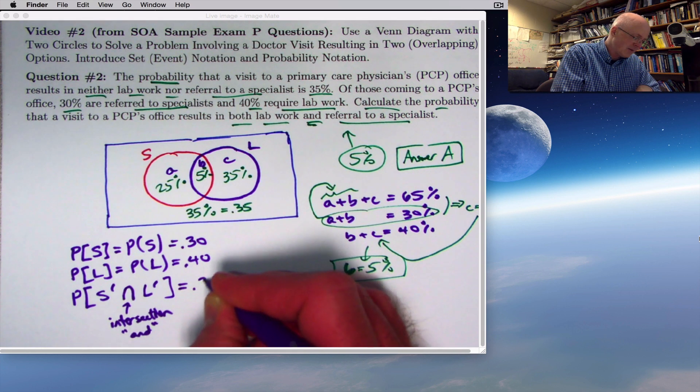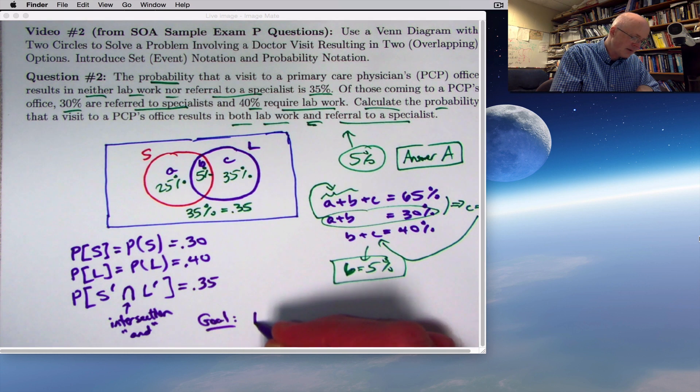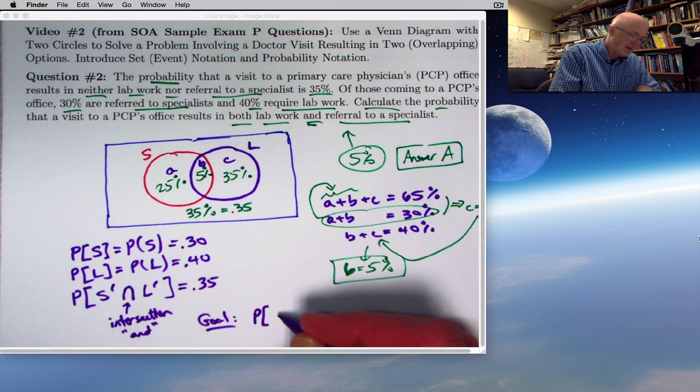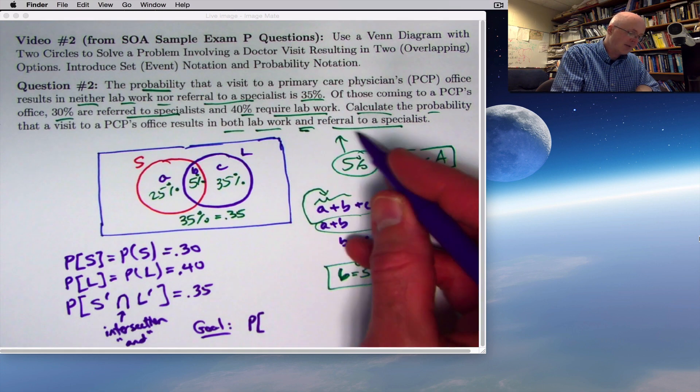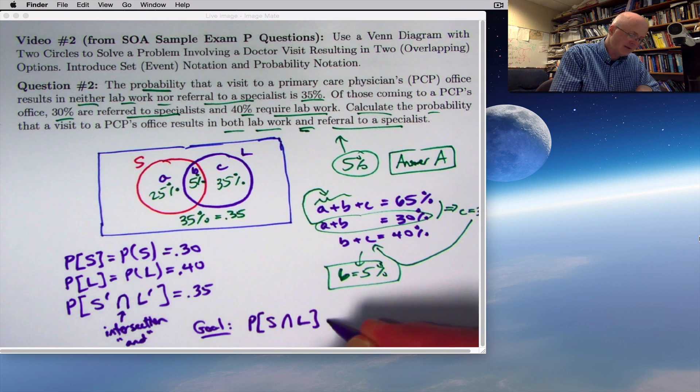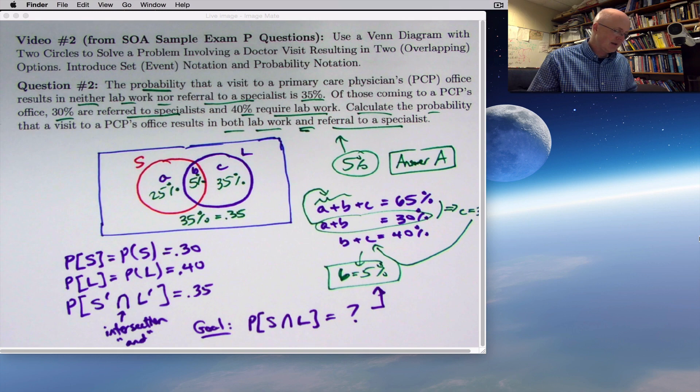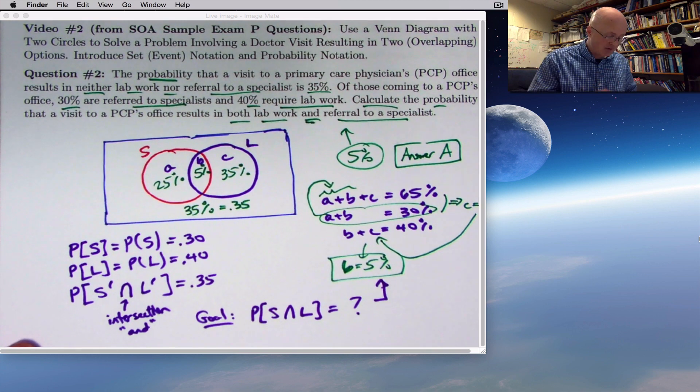That's the 35%, and the goal would be to find the probability of somebody having both lab work done and referred to a specialist, S intersect L without primes. That ends up being 5%. So that's an introduction to probability notation.